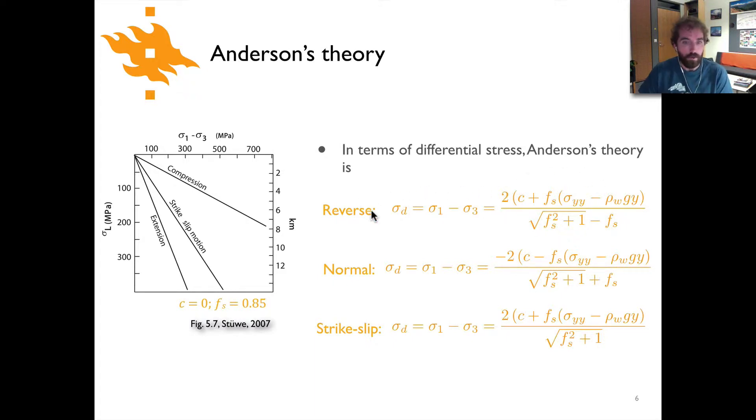So for a reverse or thrust fault, we can see that the differential stress is going to be equal to 2 times the cohesion plus the frictional strength times sigma yy, that's going to be the normal stress, minus rho w gy. So this is the pore fluid pressure component divided by the square root of the frictional coefficient squared plus 1 minus the frictional coefficient. For normal faults, you'll have a very similar looking relationship with some negative signs in different places. So you'll have a minus 2 up here and a minus fs. Same thing on the bottom here, except you've got this plus fs instead of minus fs as you had for the case for reverse fault.